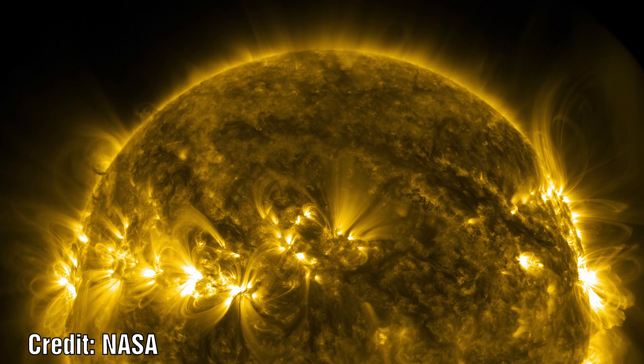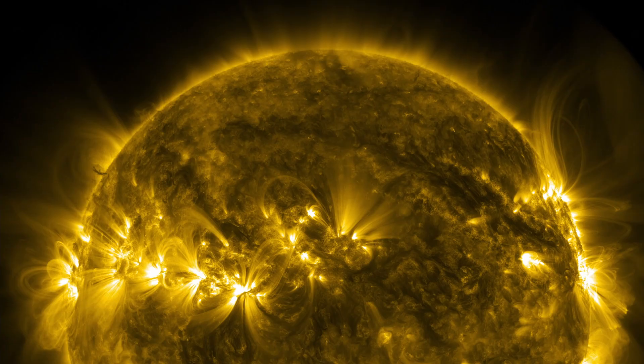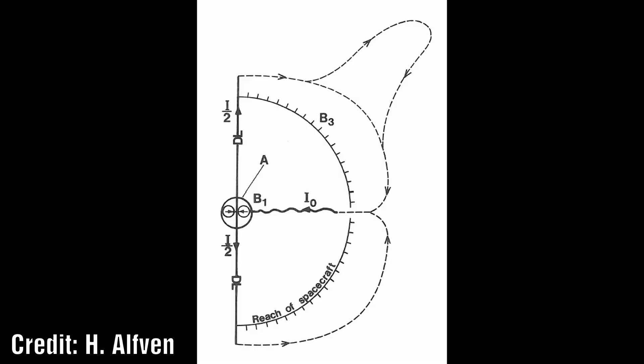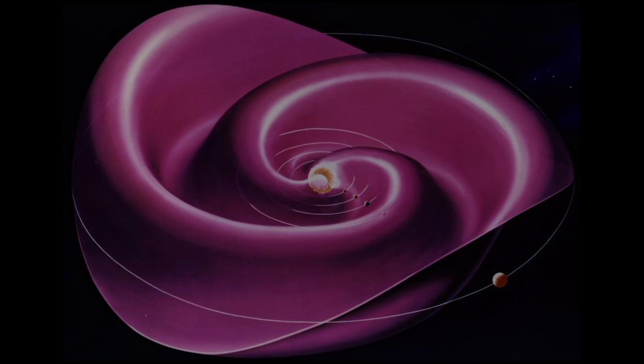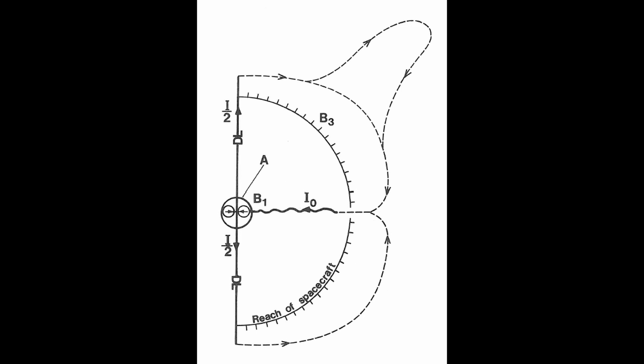Heliospheric currents. Hannes Alfvén viewed that the sun acts as a unipolar inductor producing a current which during odd solar cycles goes outwards along the axis in both directions and inwards in the equatorial plane. The current closes at a large distance. The exact location is currently unknown. The equatorial current layer is often very inhomogeneous. Further, it moves up and down like the skirt of a ballerina. In even solar cycles, the direction of the current is reversed.